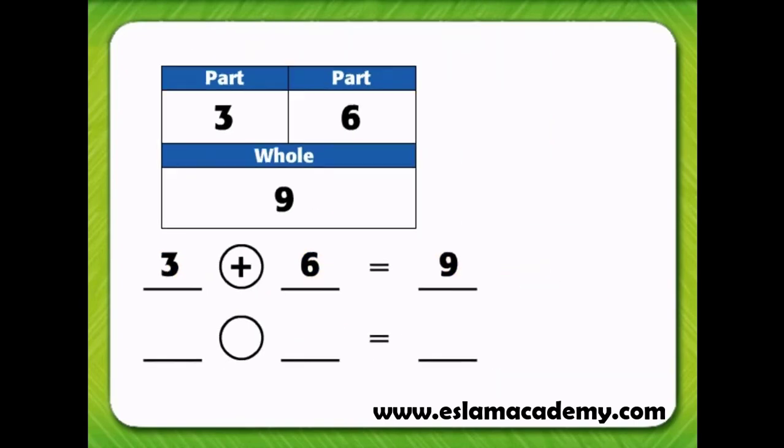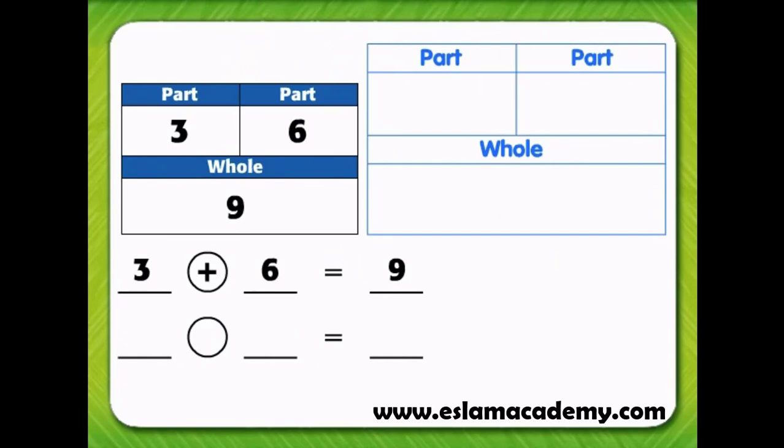The number in the first part section is 3, so place 3 red counters in the first part section of the work mat. The other part is 6, so place 6 yellow counters in this part section. To show the whole, place 3 red counters and 6 yellow counters in the whole section of the work mat.